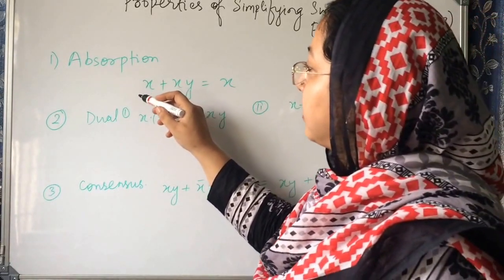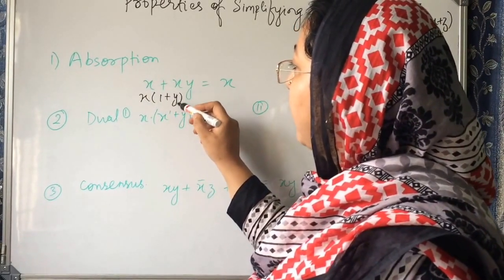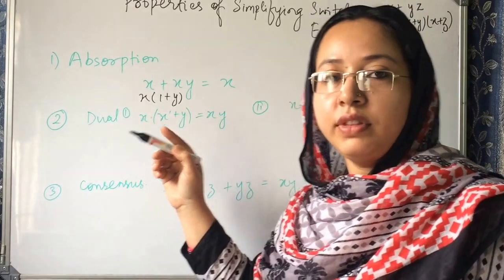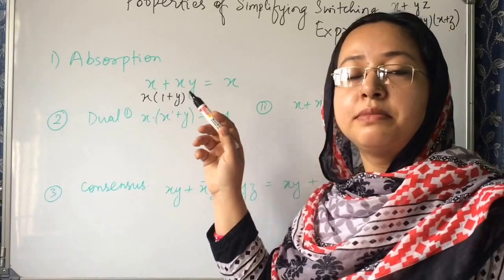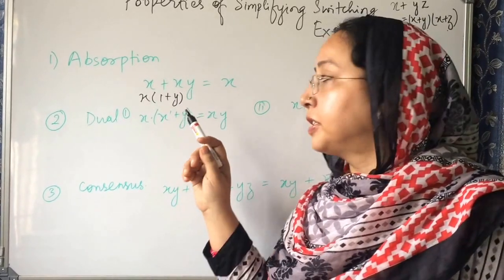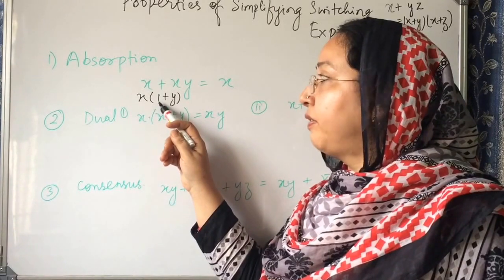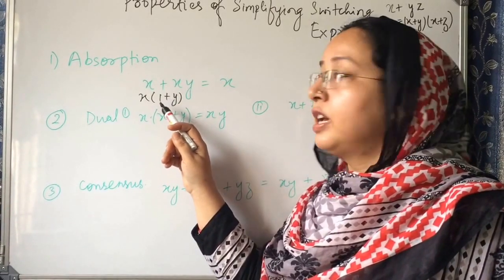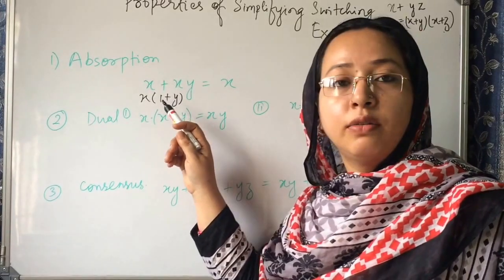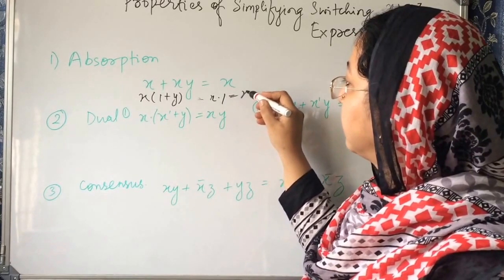We can take x common here. So it will become x into 1 plus y. And when we do 1 plus y, we are doing OR operation and if one of the input is 1, then its output will be always 1. So, 1 plus y will be 1. So it will be x dot 1, which is x.